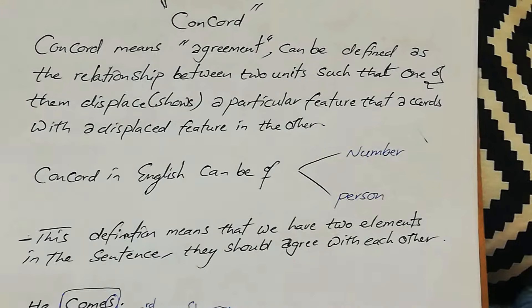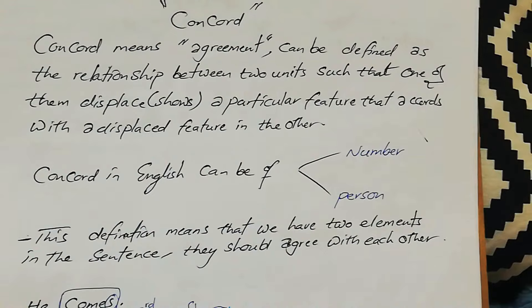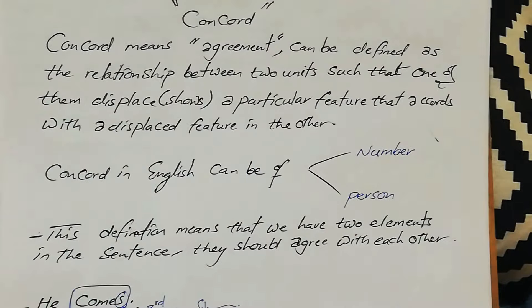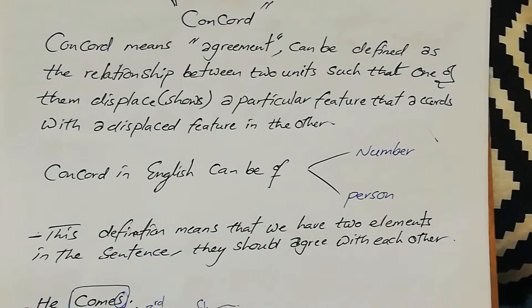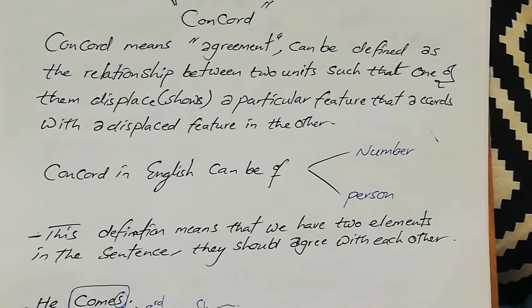Agreement means the relationship between two units, such that one of them displays — that is, shows — a particular feature that occurs with a corresponding feature in the other. In other words, it is the agreement between two elements in a sentence. Two elements such as subject and verb, or subject and object, must agree with each other.